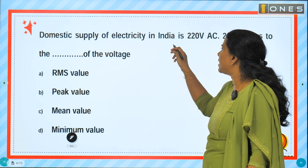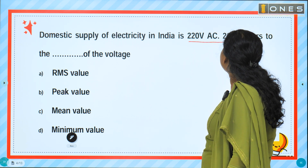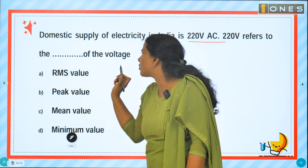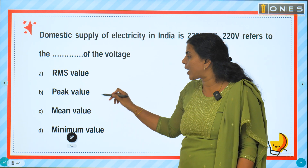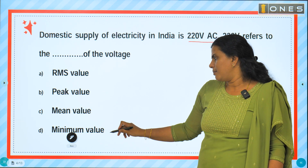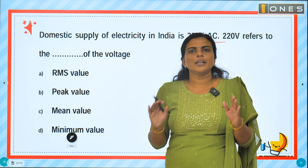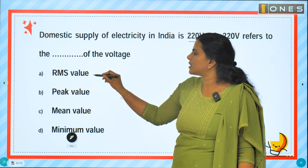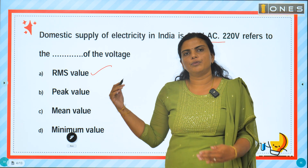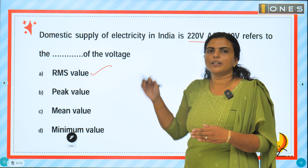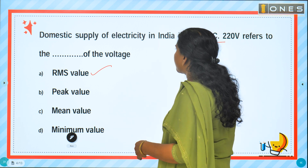Domestic supply of electricity in India is 220 volt AC. The 220 volt refers to which value of the voltage — RMS value, peak value, mean value, or minimum value? The answer is RMS value.